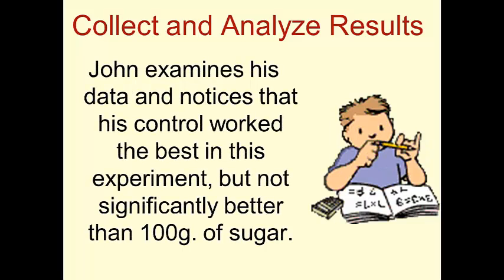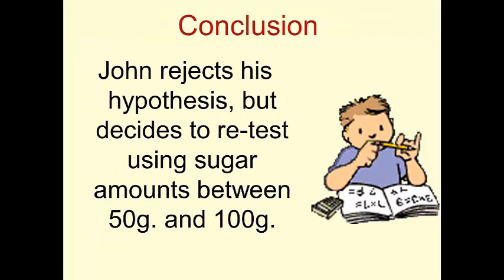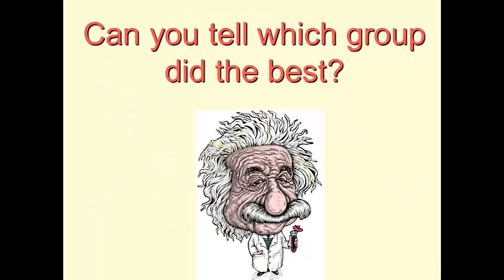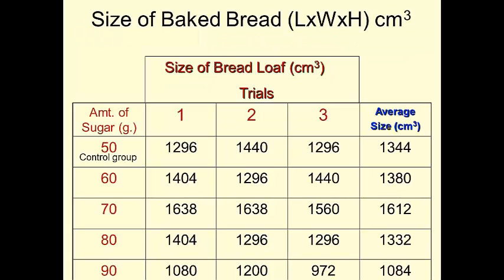This just states that he noticed that his control group worked the best, but not that much better than the 100 grams. So, he is going to reject his hypothesis and try again. He is going to test now 50, 60, 70, 80, and 90. You can now see that the best amount of sugar was 70 grams because it made the largest loaf.